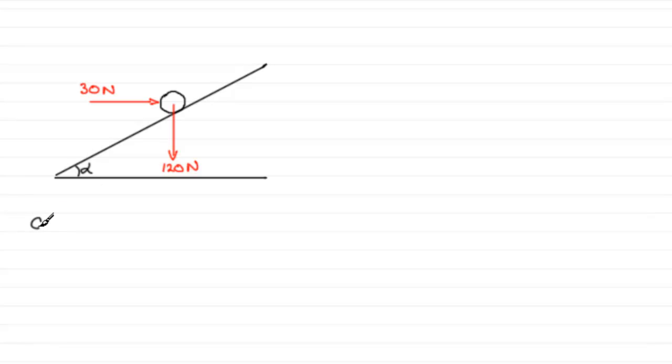We're given that the tan of this angle alpha, tan alpha, equals three quarters. And you'll see in a moment that we don't need to work out what alpha is. We're also told that the coefficient of friction, mu, equals one half.